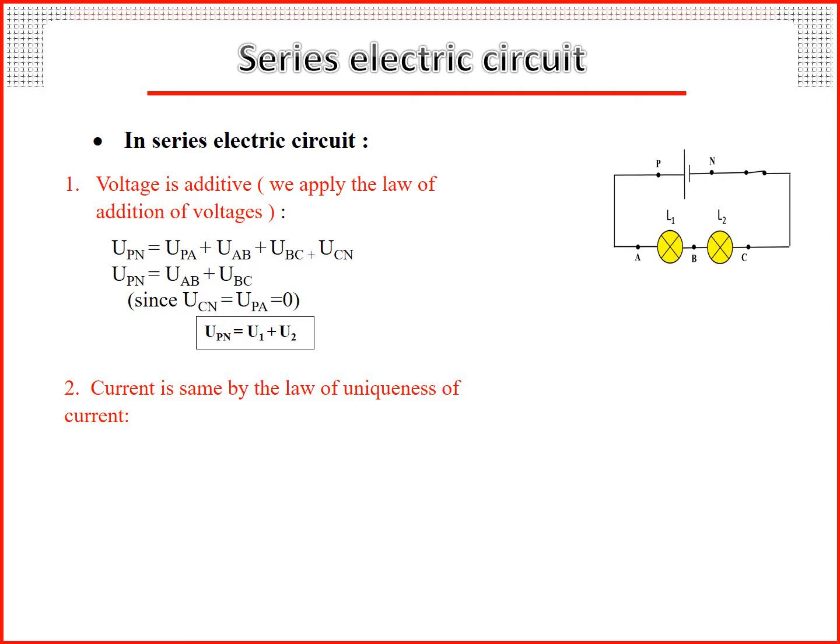Current is same by the law of uniqueness of current: I = I1 = I2.